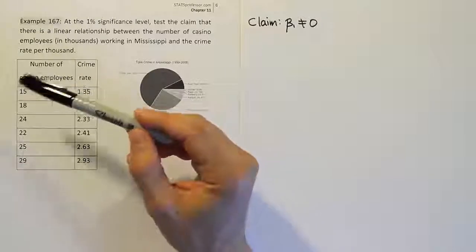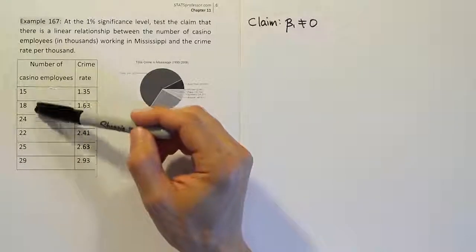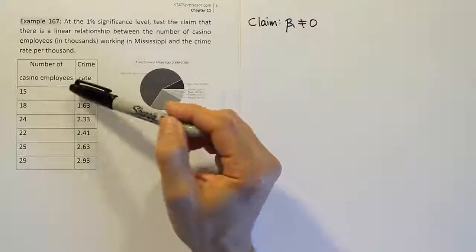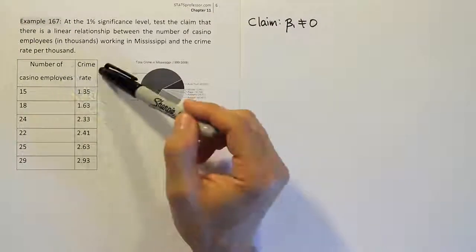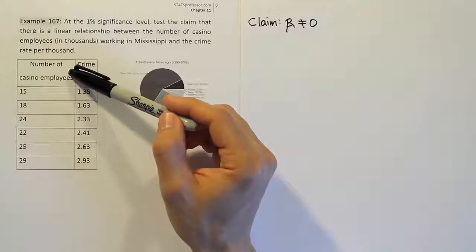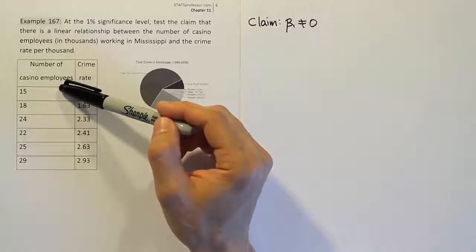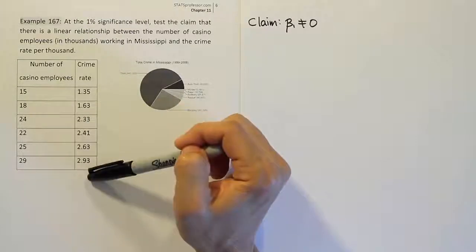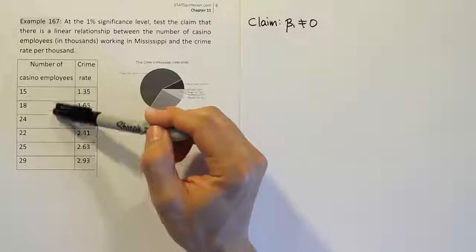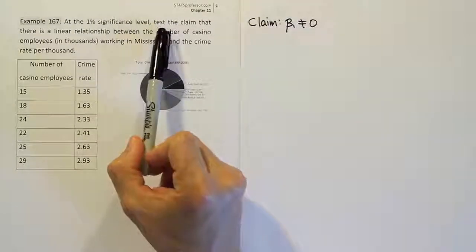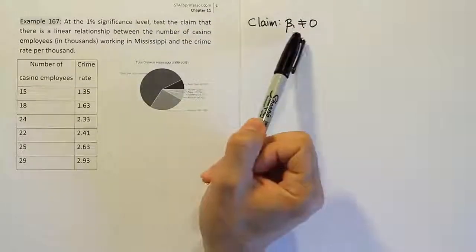Positive relationship would be the idea that as there's more gambling, or hence more casino employees, the crime rate goes up. And so probably the idea behind this is that most people would agree that gambling is probably not going to lower the crime rate. So most likely, the most logical choice is that gambling increases the crime rate, which means a positive relationship. As the number of casino employees go up, the crime rate goes up. But I want you to bear in mind that the problem does not say that explicitly.